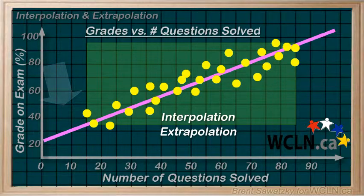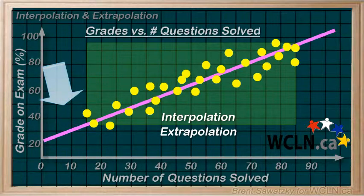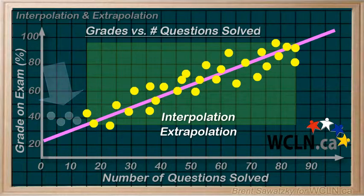Let's look at the lower end of our graph. Maybe students who do less than 15 questions during their studying find it pretty easy to get 40%, whether they do the questions or not. So, maybe the real data would look like this.